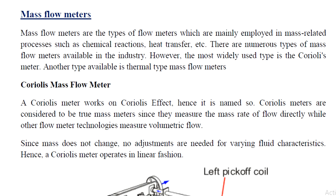Mass flow meters are types of flow meters. There are numerous types of mass flow meters available in the industry. The most widely used type is the Coriolis meter. Another type is the thermal mass flow meter. In our study, we will cover the Coriolis type mass flow meter.